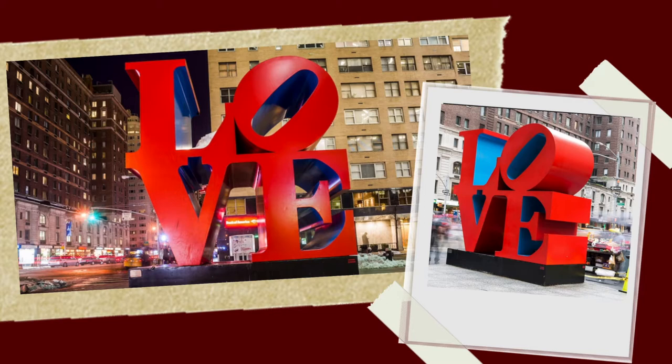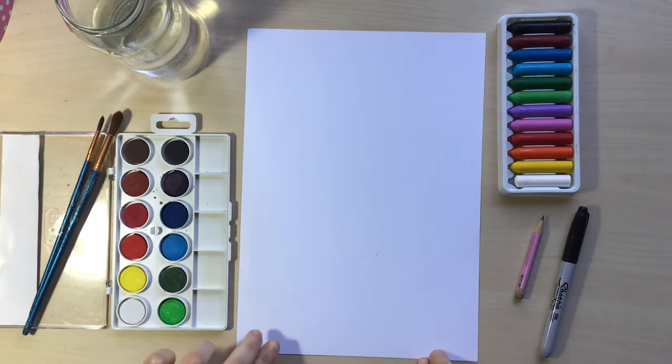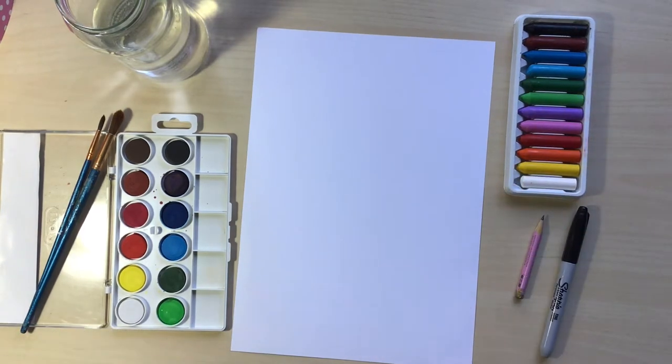After this very quick intro, let's start with our own project. We will create an art piece using the word love. We are going to need a normal piece of white paper, a pencil, a black marker, and any coloring materials of your choice, like crayons, markers, watercolors.